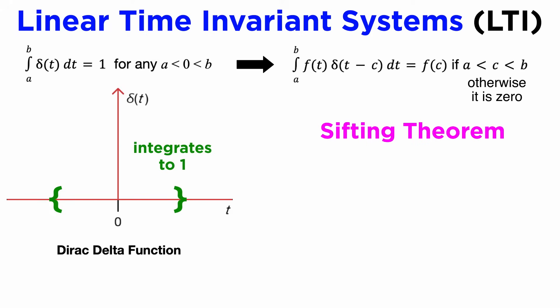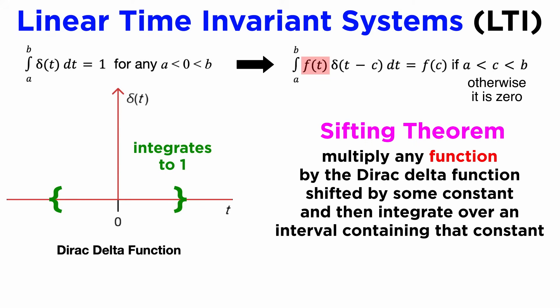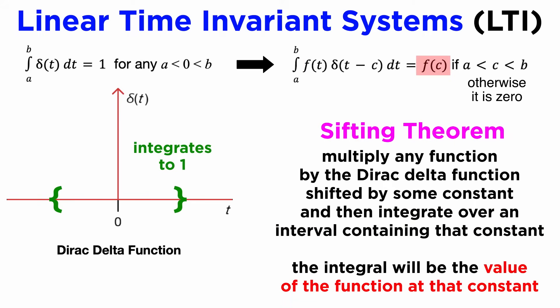A direct consequence of this is the sifting theorem. If we take any continuous function f(t) and multiply it by a Dirac delta function whose spike is translated to any point in time c, and then integrate over any interval containing that spike, the result will simply be the value of the function at c, f(c), and if the interval doesn't contain the spike, the result is zero. We often say that the Dirac delta function sifts, or filters, through the values of f(t), picking out only the value where it spikes, at t equals c.